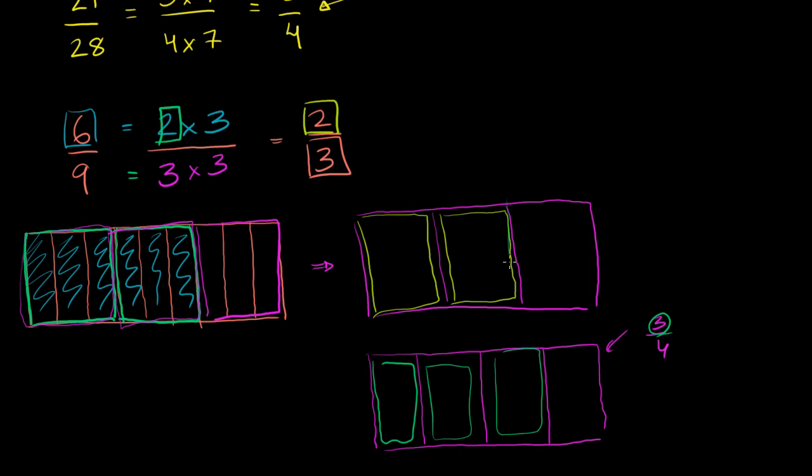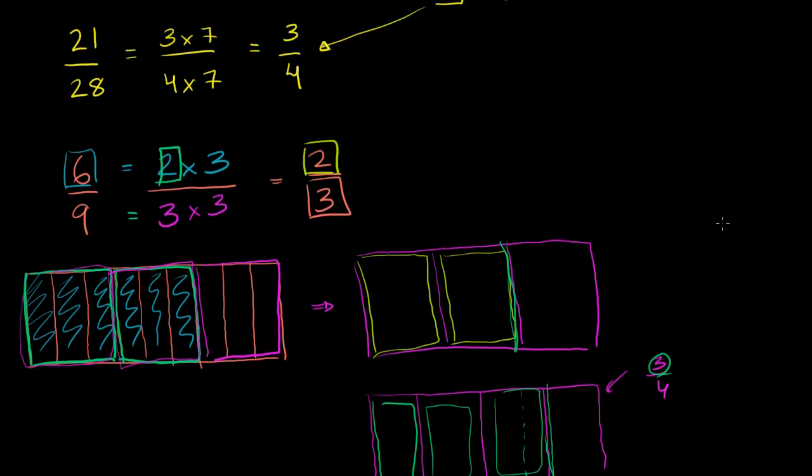2/3 gets us to this far of the candy bar, while 3/4 is a little bit more of the candy bar. 2/3 is about that far, 3/4 is even more. So 3/4 is larger than 2/3. And we'll show you in the future how to do it numerically. We can use a calculator if you like, or you can do it by hand.